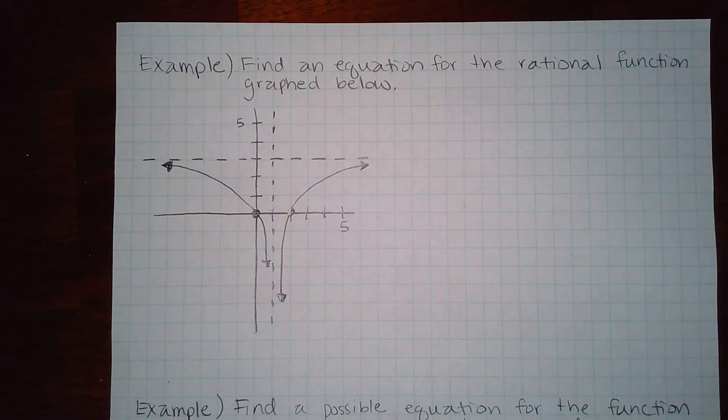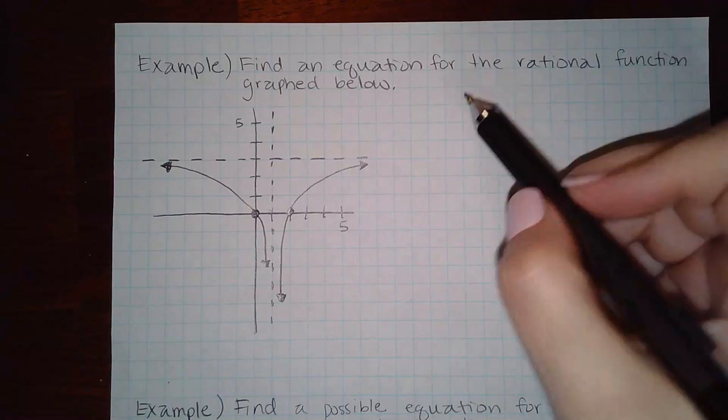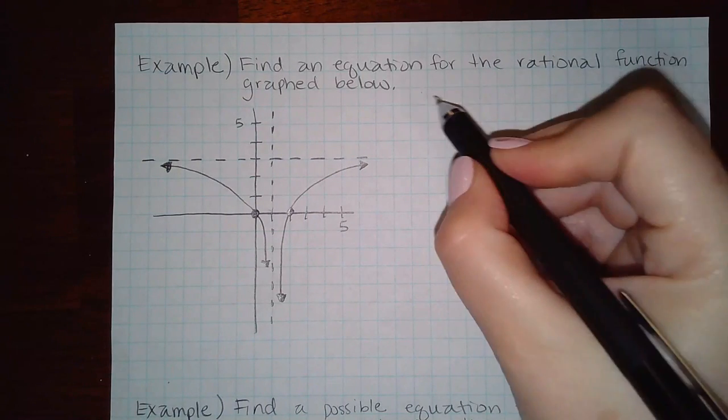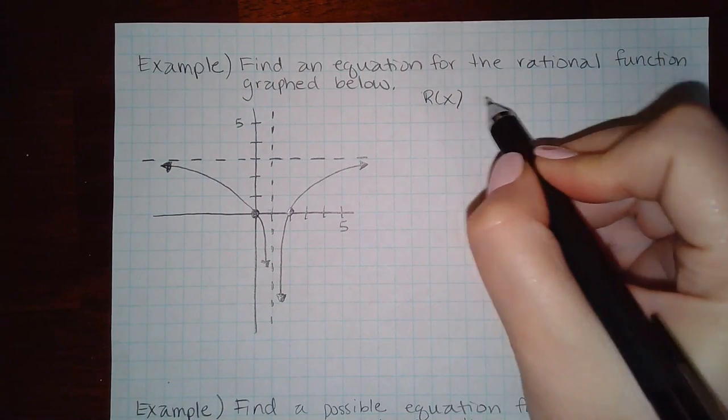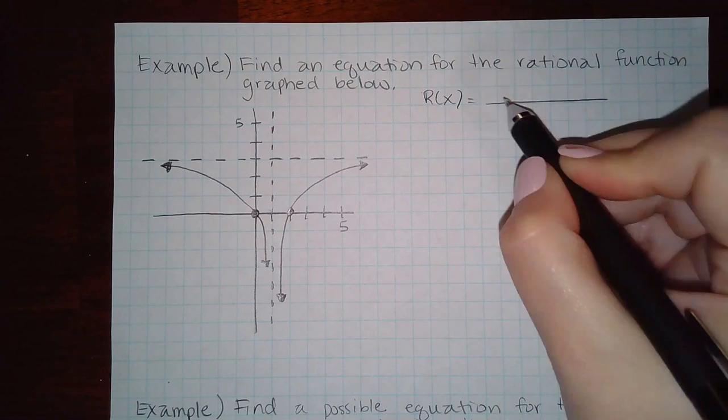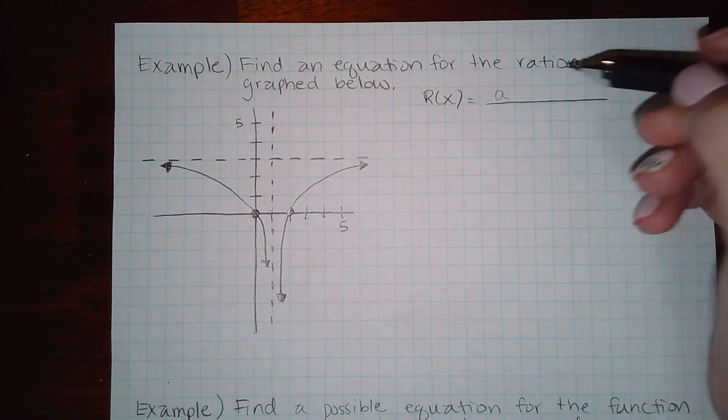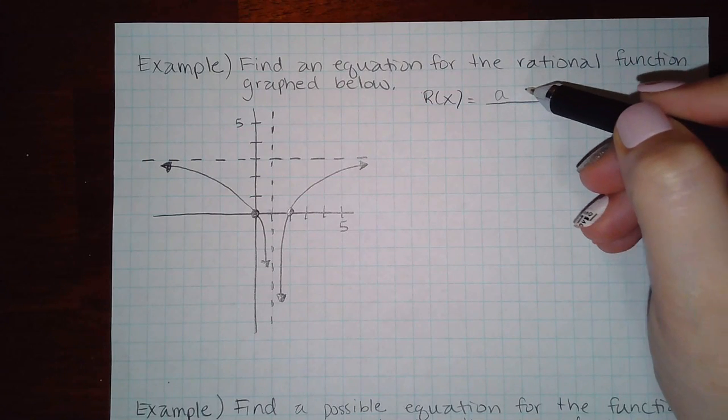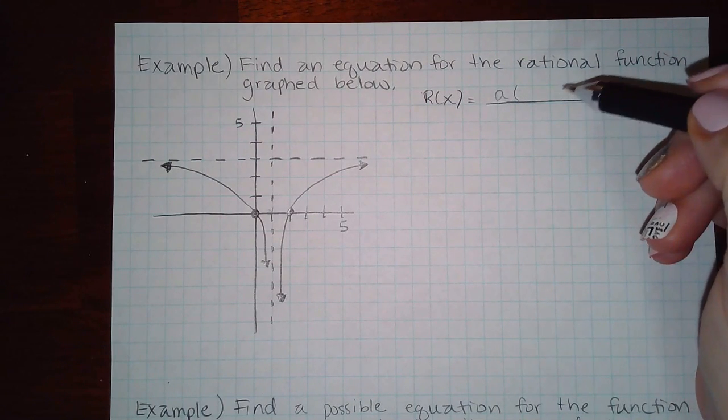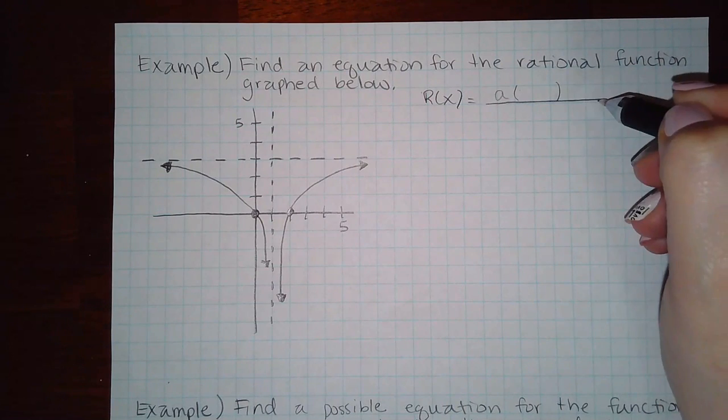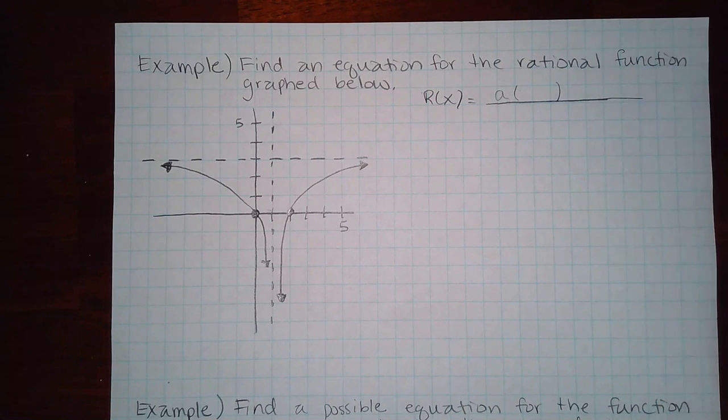Okay, now for these problems you're going to have to remember that you have a rational function and you could have a coefficient here and you could have some x-intercepts. These parentheses depend on how many x-intercepts I have.